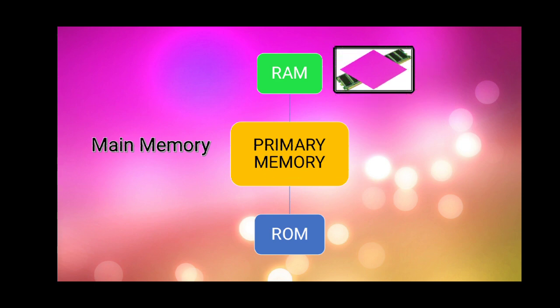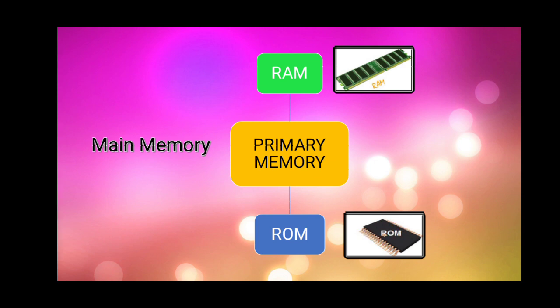Next hai aapka jo first type RAM ka. So RAM ki picture you can see on the screen my dear students. Ek chip type ka dikha hai, green color ka — this is a RAM. Now you must be thinking ROM kya hai. So my dear students, here is the ROM — ROM ka picture. It is looking like a chip. Now, what is the full form of RAM? Random access memory.